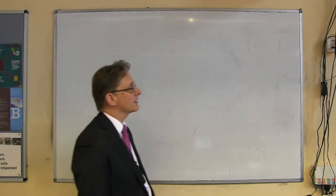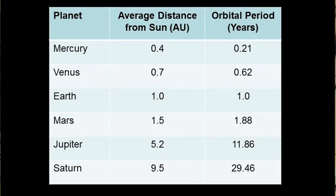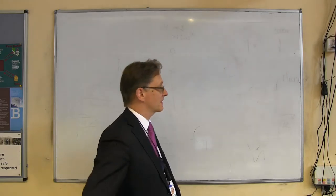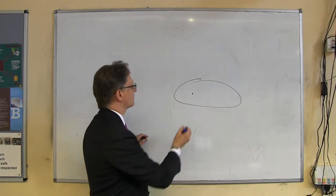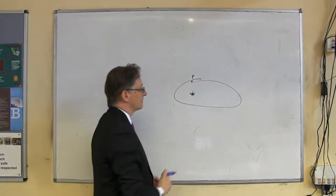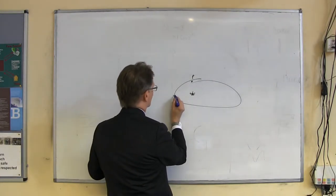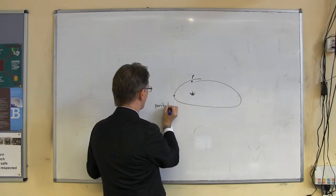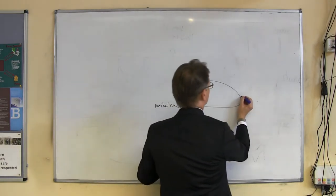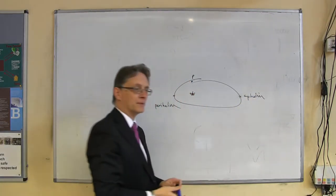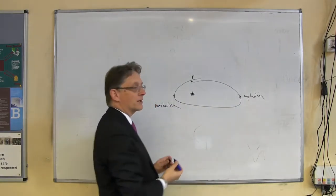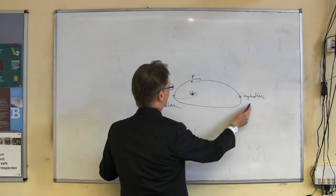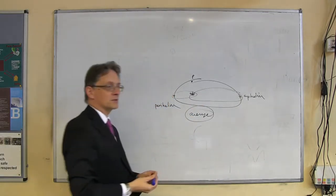Looking at the table: the second column talks about average distance from the Sun. We say 'average distance' because the orbits are elliptical — there are times when the planet is quite close (perihelion) and times when it's furthest away (aphelion). In the case of planets they're not that different, but they are different. So the best approach is to take the average of those two, which is why the table uses that word.